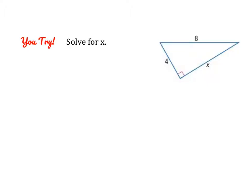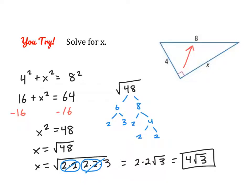Go ahead and pause the video and give this problem a try. Go ahead and check your work. You could say X squared plus 4 squared equals 8 squared, or 4 squared plus X squared equals 8 squared. What's important is that 8 is your C value. When you simplify, we end up with the square root of 48, which can be simplified. I found the prime factors, circled the pairs, and then simplified from there. So we should end up with 4 times the square root of 3.